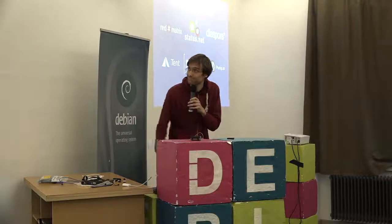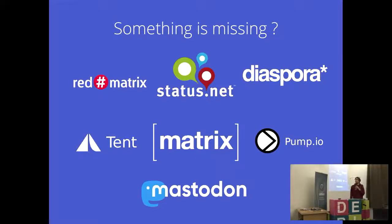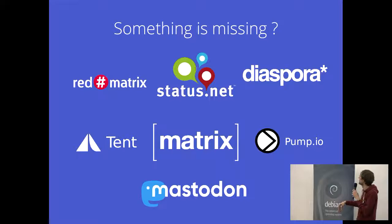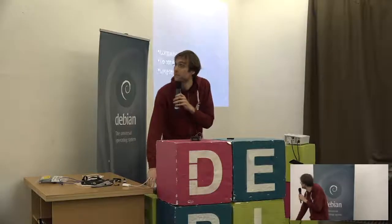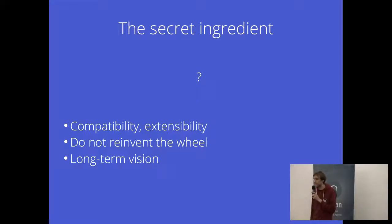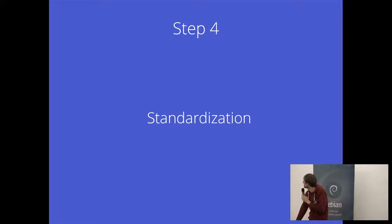You need these steps. I made these slides three years ago and I just added Mastodon recently, but we still have this big difference of platforms. There is some communication between platforms, some standards starting to come in especially between Diaspora and Mastodon, but there is still a lot of work to do. The secret ingredient is compatibility and extensibility — don't reinvent the wheel and don't create another social network or IM platform with all those communication troubles. Have a long-term vision. The secret ingredient is standardization.